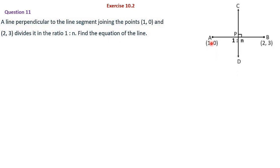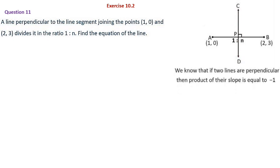When we visualize: AB is a line segment joining the points (1,0) and (2,3). Another line CD which is perpendicular to AB is dividing AB in the ratio 1 is to n. We are asked to find the equation of line CD. We know that lines which are perpendicular have slopes whose product equals minus 1. So slope of AB into slope of CD equals minus 1.